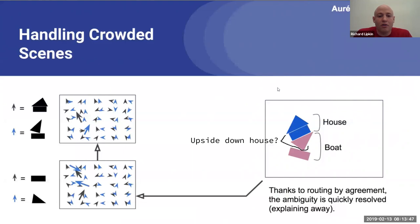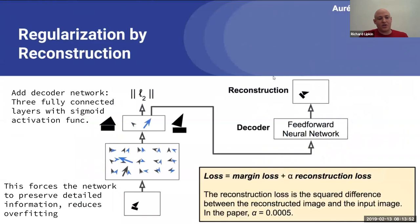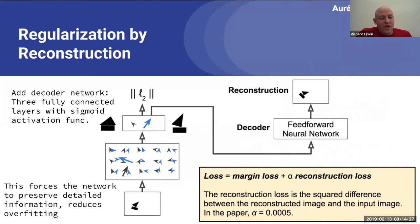Another feature of these networks is called regularization by reconstruction. A decoder network was added — just three fully connected layers and a sigmoid activation function. We use that to reconstruct the image and then penalize using the margin loss plus alpha times the reconstruction loss. The reconstruction loss is the squared difference between the reconstruction and input images. This forces the network to preserve detailed information and also reduces overfitting, functioning as a regularizer.